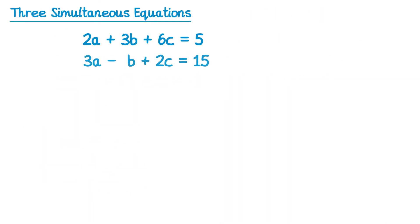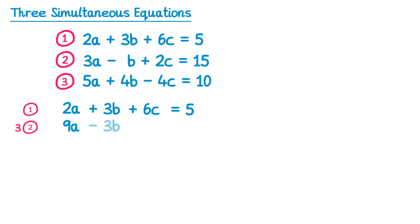Let's try a second example. So we'll start by labelling the equations 1, 2 and 3. Now we need to select two of the equations, I'm going to go for 1 and 2 again, and eliminate one of the variables. So I'm going to eliminate b this time. Since the first one has 3b, and the second one has negative b, I'll keep the first one the same, so 1, and then multiply the second equation by 3. So 3a times 3 is 9a, negative b times 3, negative 3b, 2c times 3 is plus 6c, and 15 times 3 is 45.